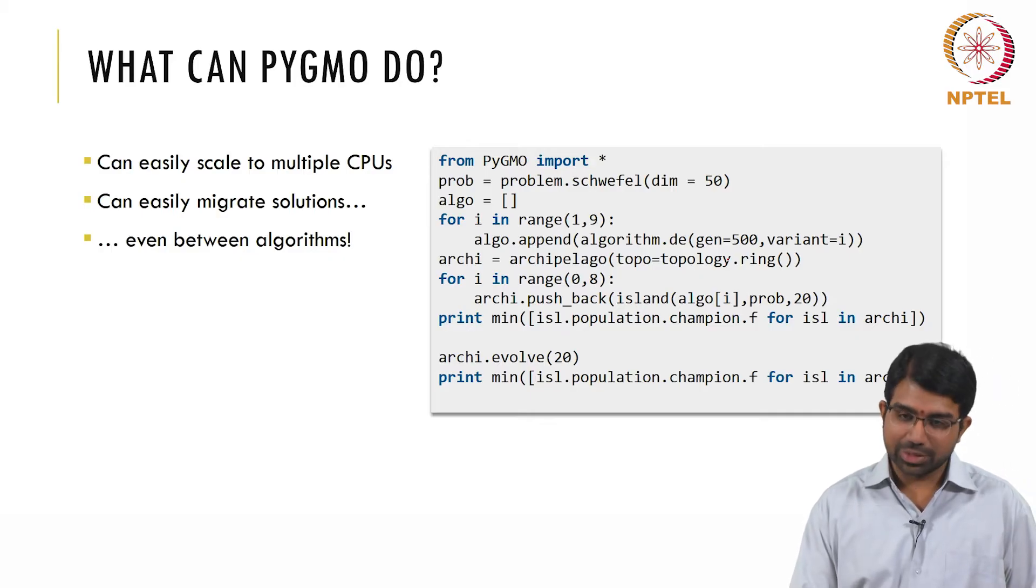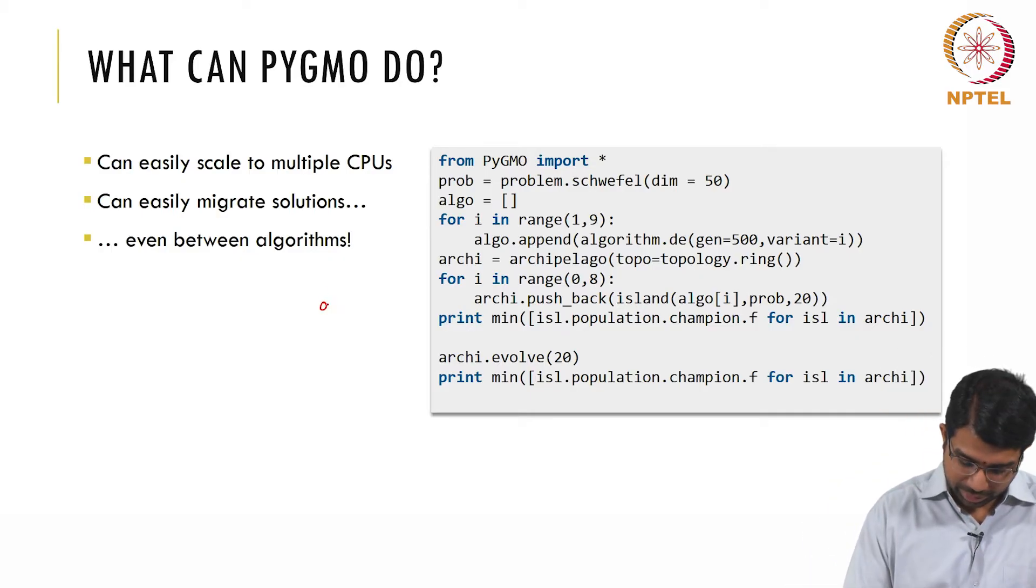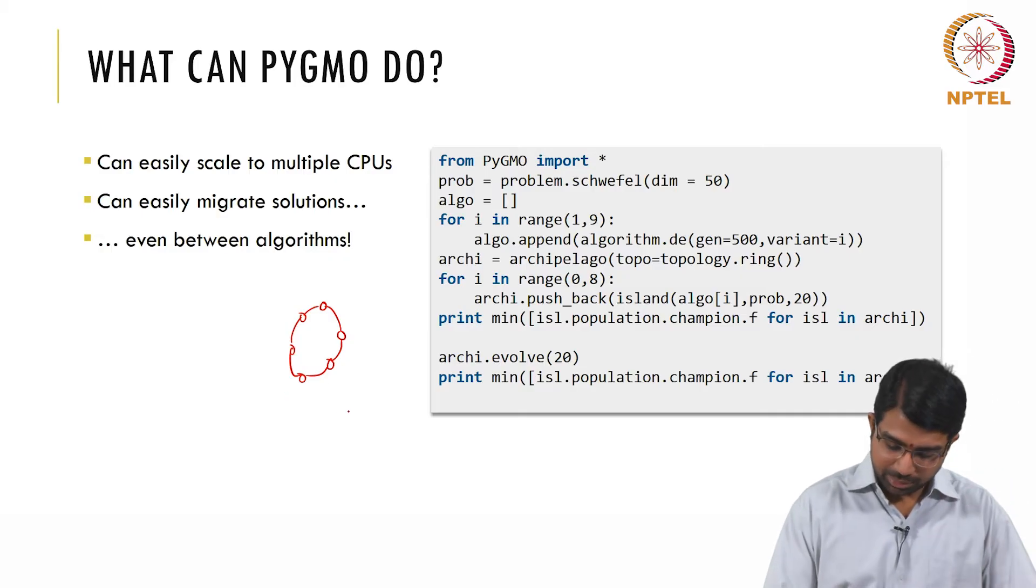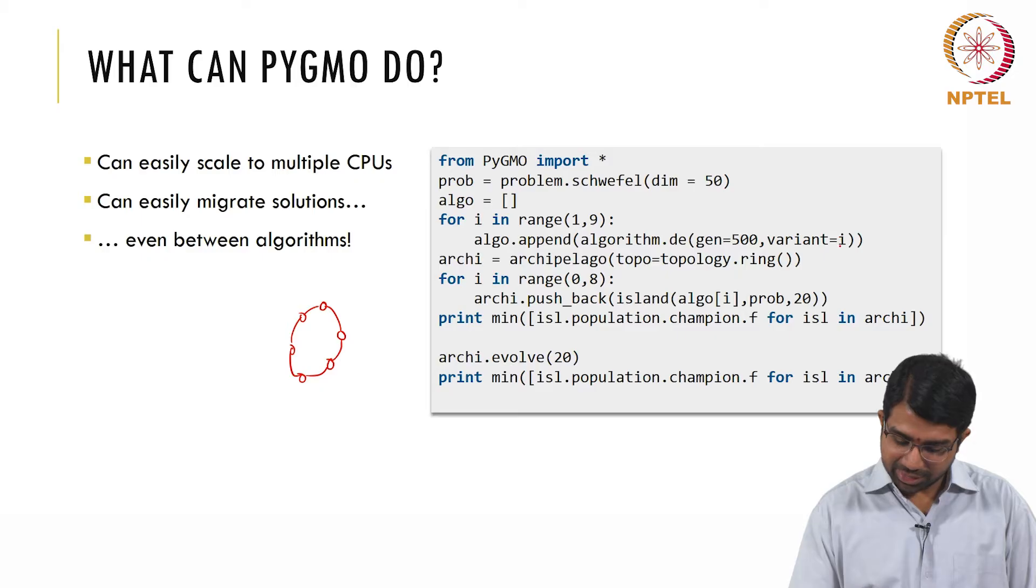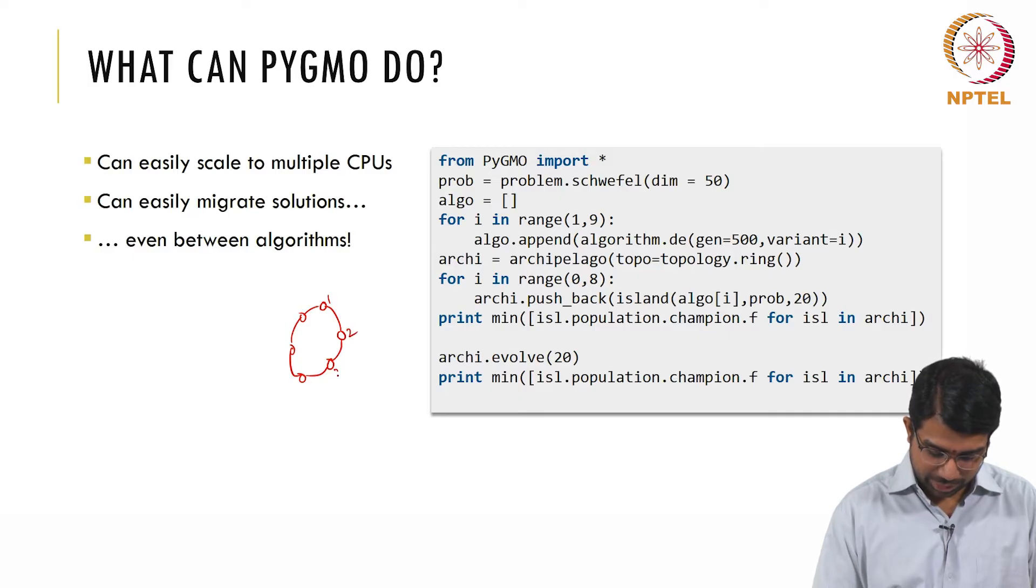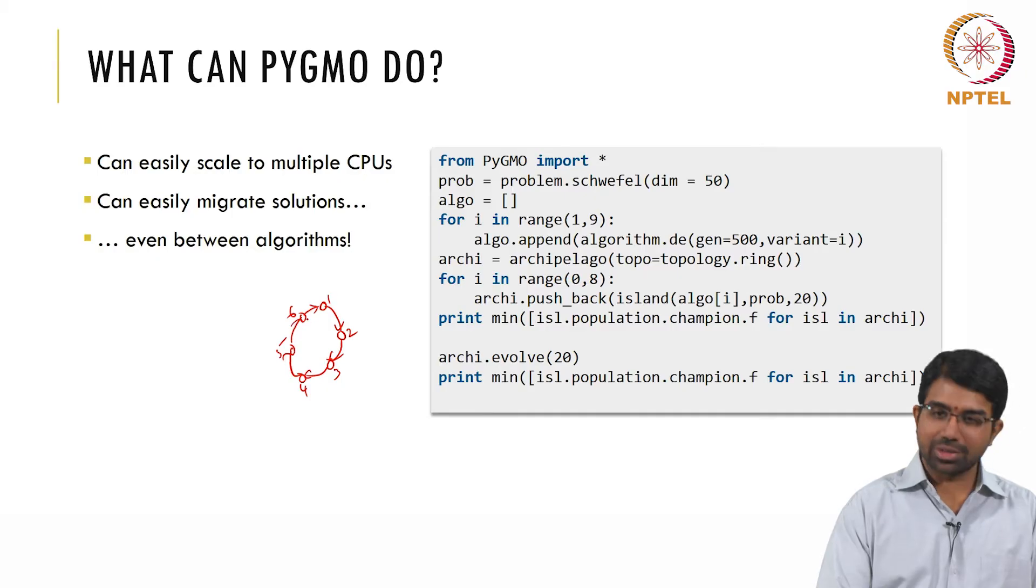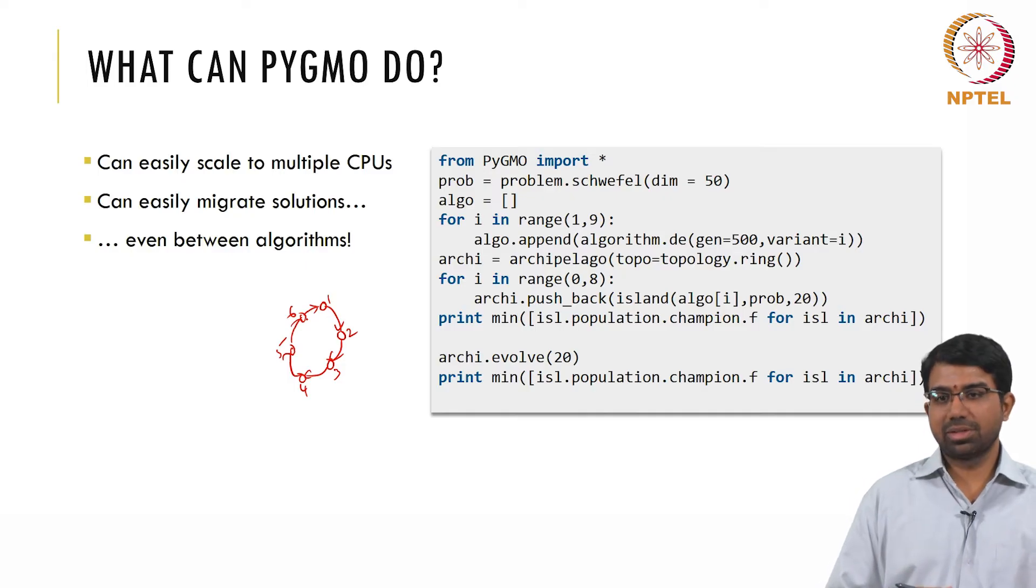So you create an archipelago with a ring topology and each of these is seeded with an algorithm. So there are variants for differential evolution. You put variant 1 here, variant 2 here, variant 3 here, 4, 5, 6, evolve them for a while. And then allow the algorithms to transfer their champions, transfer the information, continue to evolve.